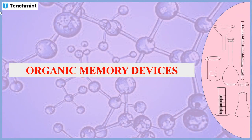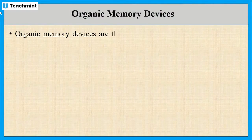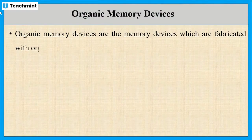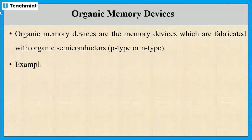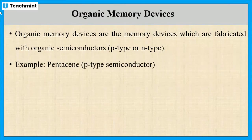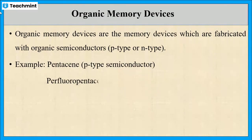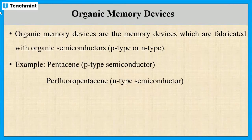In this session, I am going to explain about organic memory devices. First, let us see what organic memory devices are. These are memory devices which are fabricated with organic semiconductors like P-type or N-type semiconductors. An example is pentacene, which is a P-type semiconductor. One more example is perfluoropentacene, which is an N-type semiconductor.